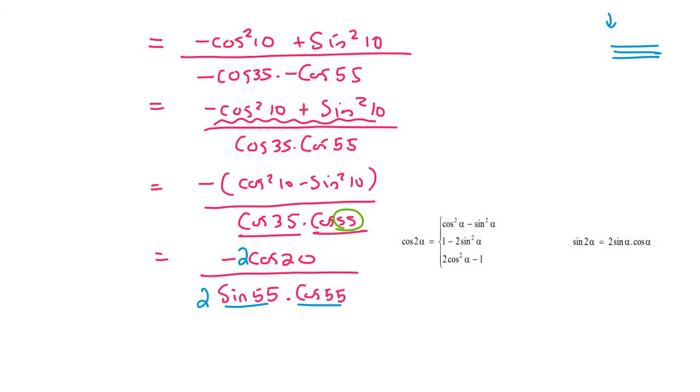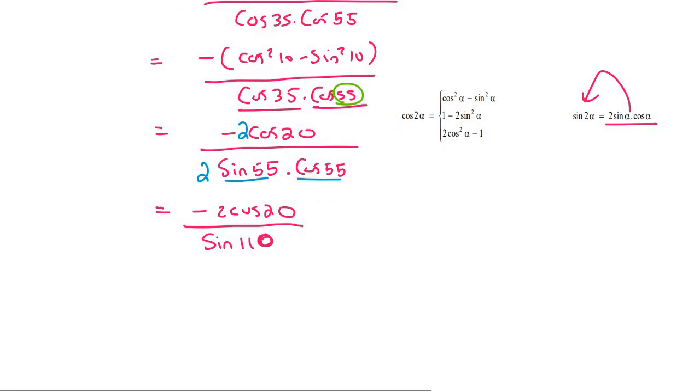And so what we have now at the top is negative 2 cos 20. And then at the bottom, we're going to have this. And we're going to rewrite it as that. So you're going to double the angles. That's going to become sin of 110.